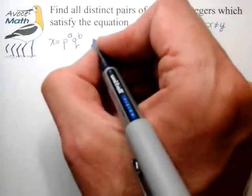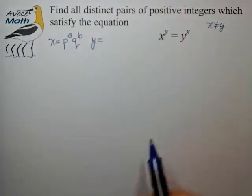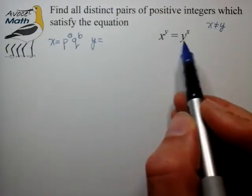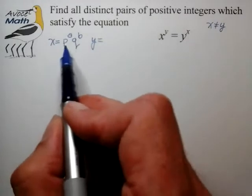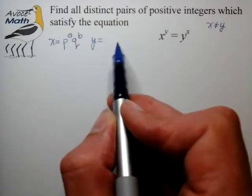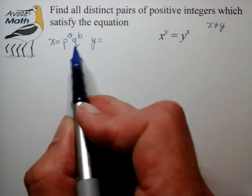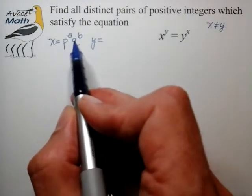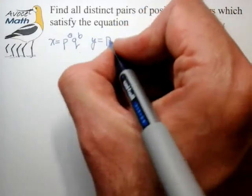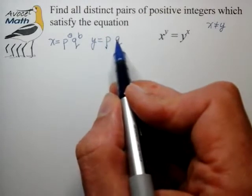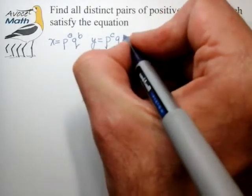So we want to write y in a similar form. But what we first realize now is that because y and x both sit at the bottom of these equations, their prime factor bases have to match up. We can't introduce a new factor to y that doesn't already appear in x. So we already see a relationship here that whatever p and q we put in x here, we also have to include for y.